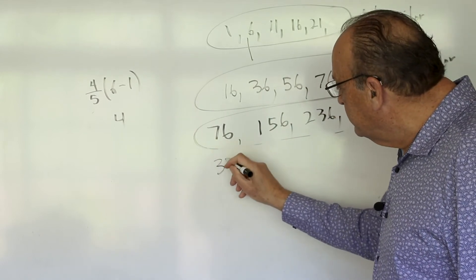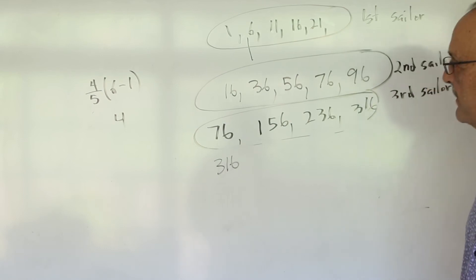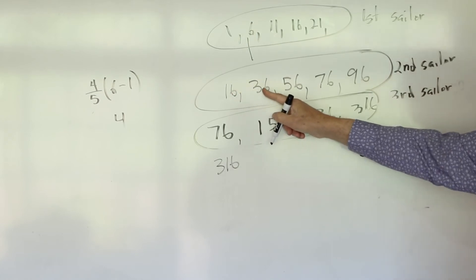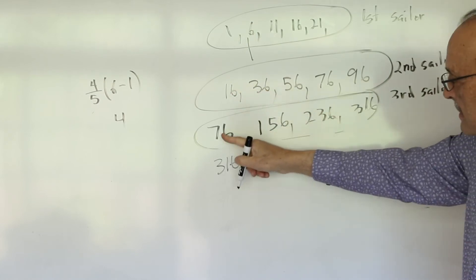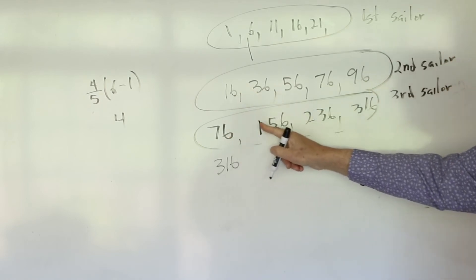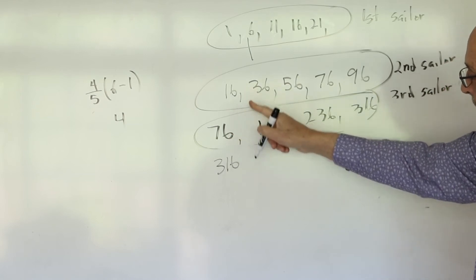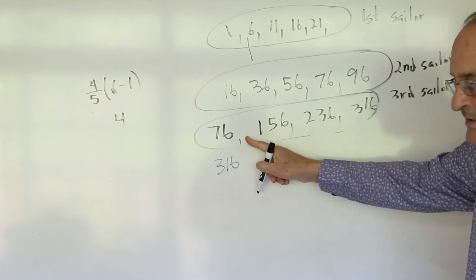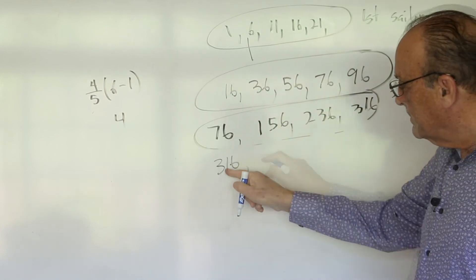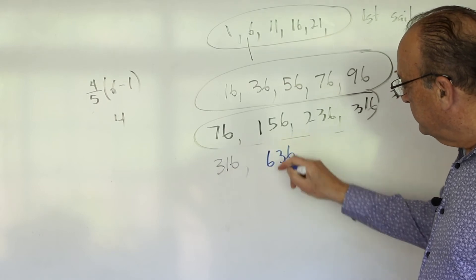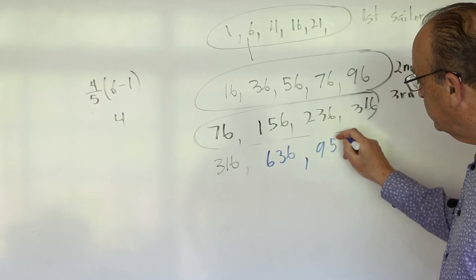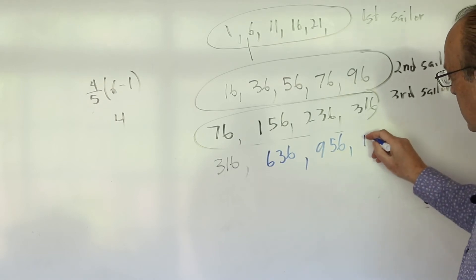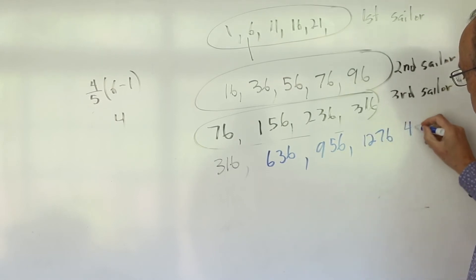So this is 316. Now we can also see a pattern here. These numbers are getting bigger by 5. These numbers are getting bigger by 20, which is 5 times 4. These numbers are getting bigger by 80, which is 20 times 4. And so this, if the pattern continues, this would get bigger by 320 because it's 4 times 80. If we add 320 to this, we get 636. Add 320 to that, you get 956. Add 320 to that, you get 1276. So these are what the fourth sailor sees.